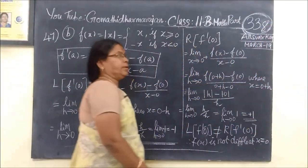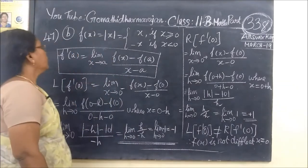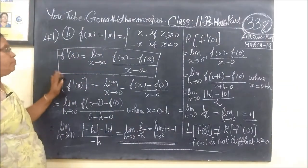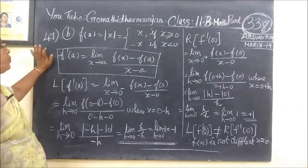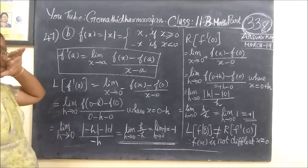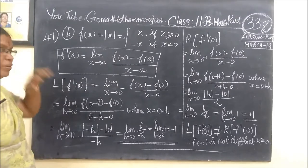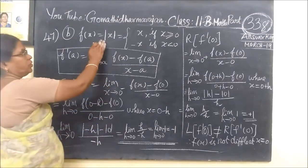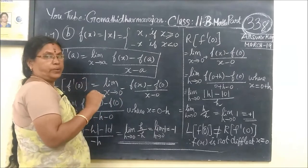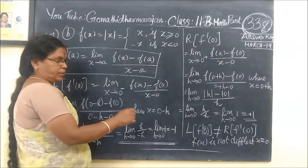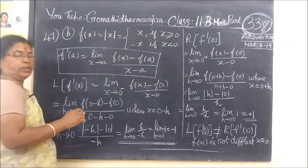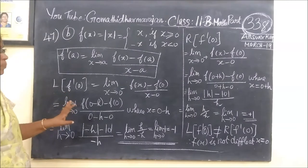So, question number 47. We are given f of n equals modulus of x. We have to prove that it is not differentiable at x equal to 0. x equal to 0 is not differentiable — we need to prove it.